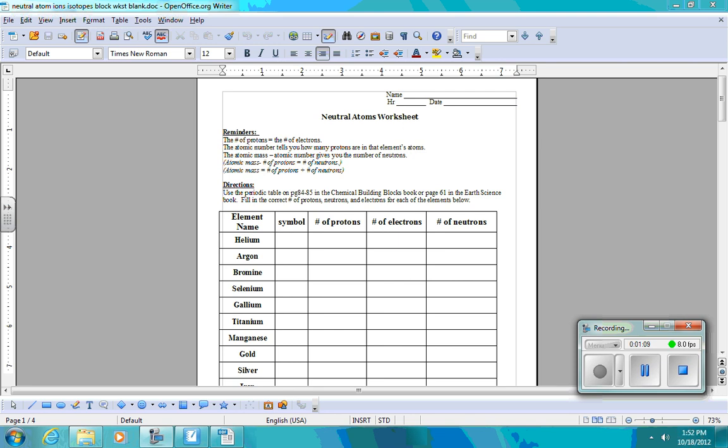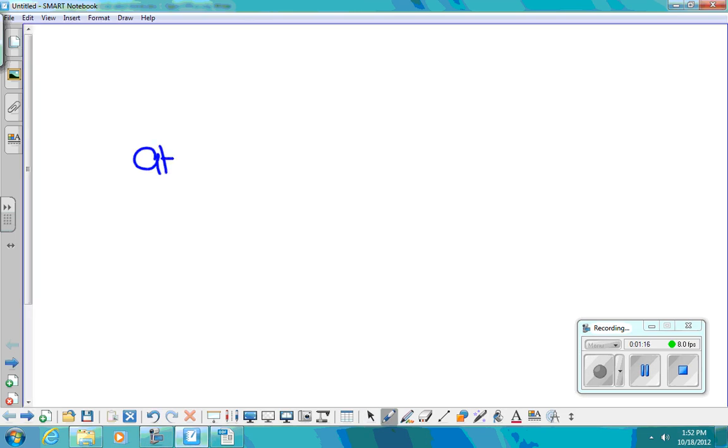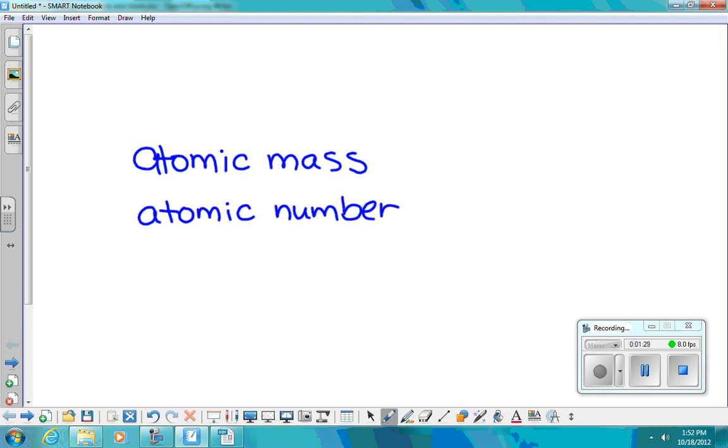Now, for each of these, you will need to look up first the atomic mass. And then we're going to look up the atomic number. After we find those, then we can figure out ways to find how many protons, how many electrons, and how many neutrons there are.